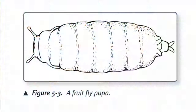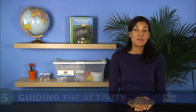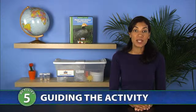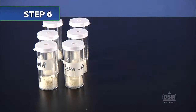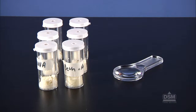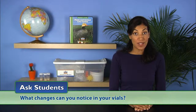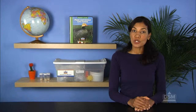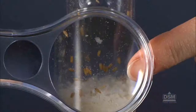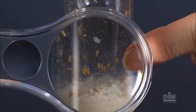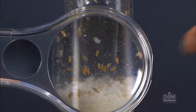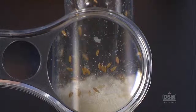To prepare for Session 3, make a copy of the fruit fly pupa picture included in the fruit fly life cycle picture set for each team of two. To begin Session 3, have teams retrieve their fruit fly vials and magnifiers. Then ask students what changes can you notice in your vials. Students should be able to identify the hard, yellow cases of the pupae affixed to the walls or inside lids of their vials.